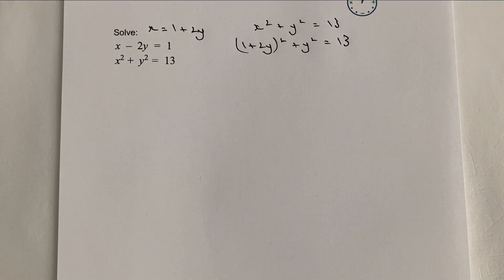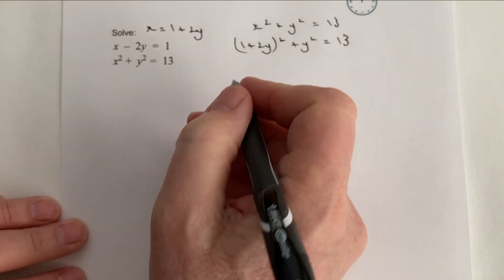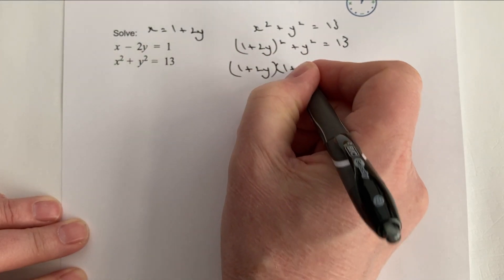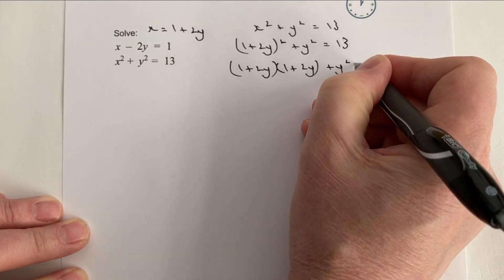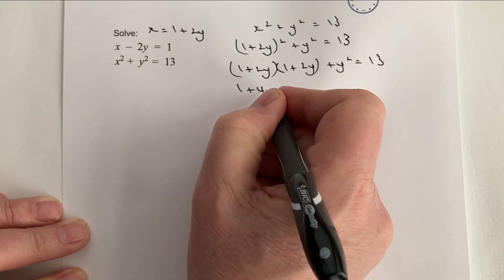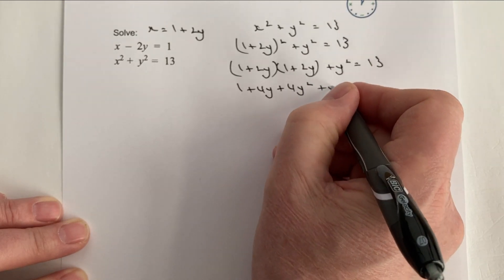At the moment I'm feeling okay about it because it just says 'solve', so in this particular one I don't think we're going to be using the quadratic formula or completing the square. Hopefully we should be able to just factorize it. If I expand that I'm going to get (1 + 2y)(1 + 2y) + y² = 13, which gives me 1 + 4y + 4y² + y² = 13.